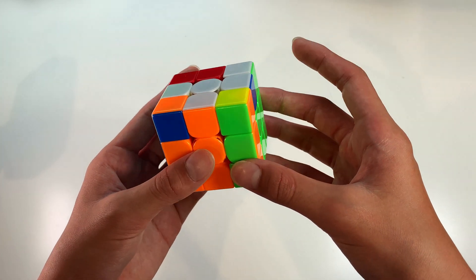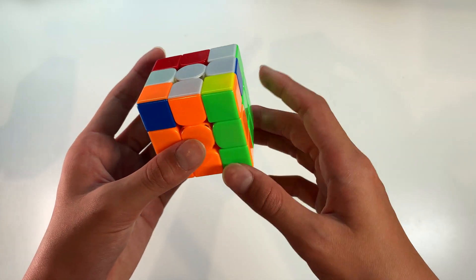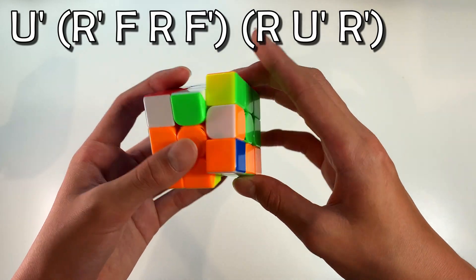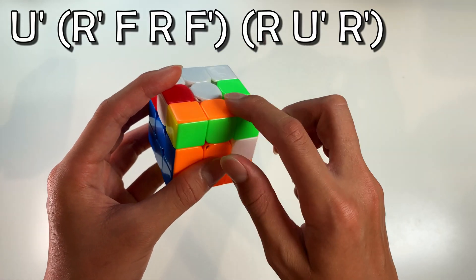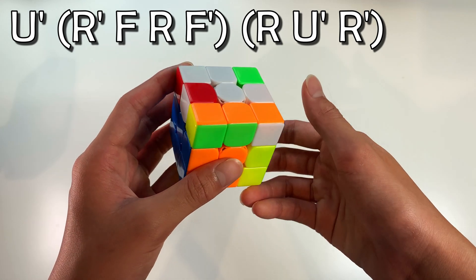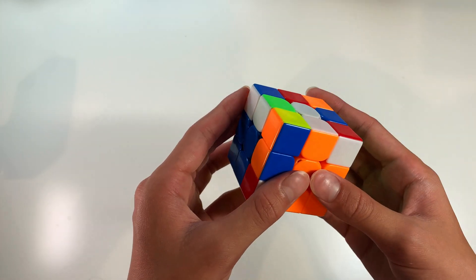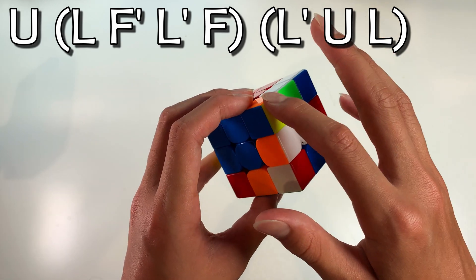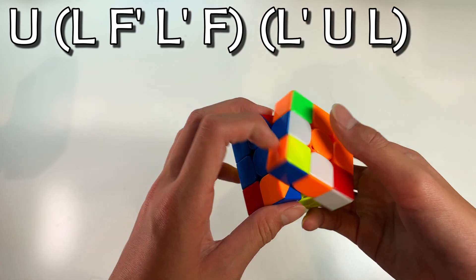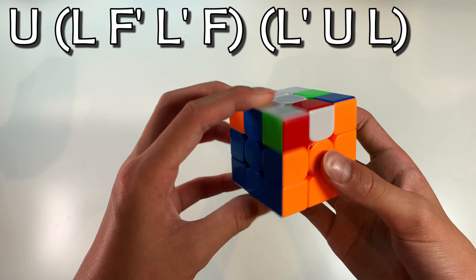And another way is the way that I'm going to show today which is moving the corner over here with a U' and then you can just do a sledgehammer and that will actually pair this up. Now you can just insert it straight away. Same goes for the left slot. You can also do a U layer move to move the corner all the way to the back, sledgehammer, and just insert it as per normal.